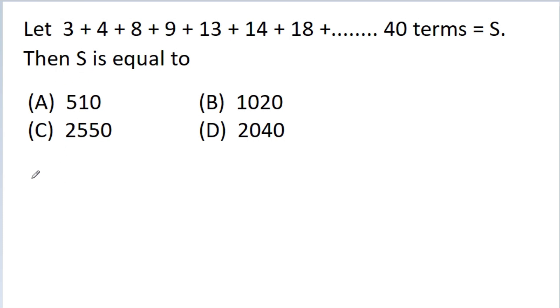So the given series is 3 plus 4 plus 8 plus 9 plus 13 plus 14 and up to 40 terms. We can notice that the difference between 3 and 4 is 1. The difference between 8 and 9 is also 1, and the difference between 13 and 14 is also 1.